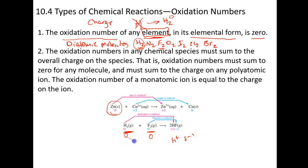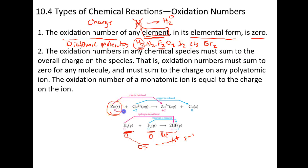Notice what happened to hydrogen: it became more positive, so it lost an electron — the hydrogen is being oxidized. Fluorine went from zero to a negative number; it gained electrons and became more negative, so fluorine got reduced. Similarly, zinc went from a zero charge to plus two, lost two electrons, and is oxidized. Copper went from plus two to zero — it gained electrons, so it was reduced.